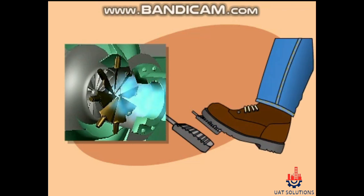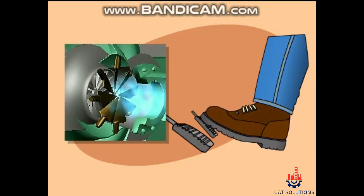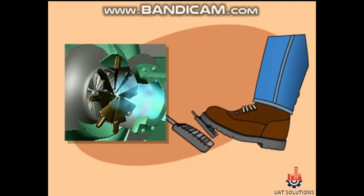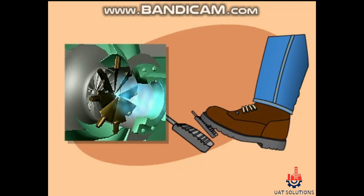On our constant speed chiller, the pre-rotation vanes have the same effect as the gas pedal. They restrict the gas flow to the compressor, while the compressor continues to operate at full speed — or, as our car analogy shows, full throttle.